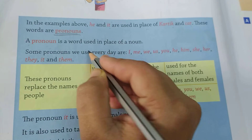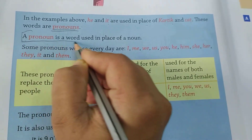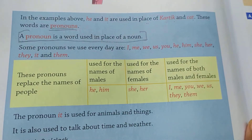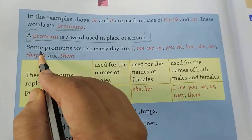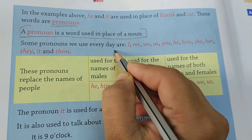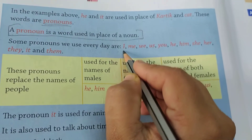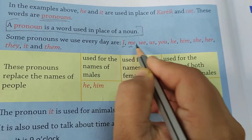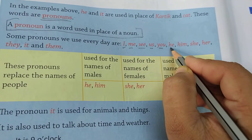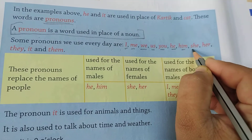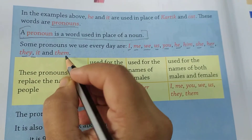A pronoun is a word used in place of a noun. Pronoun kise kehte hain? Noun ki jagah jo bhi word use karein, use pronoun kehte hain. Some pronouns we use every day are: I, me, we, us, you, he, him, she, her, they, it, them.